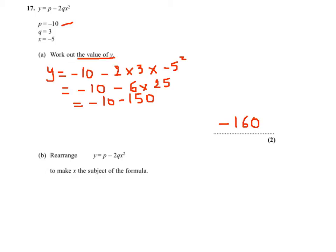Second question, we have to make x the subject of the formula. We have y equals p minus 2qx squared. So the first thing I will do is add 2qx squared on both sides. This is in order to get rid of this minus 2qx squared.